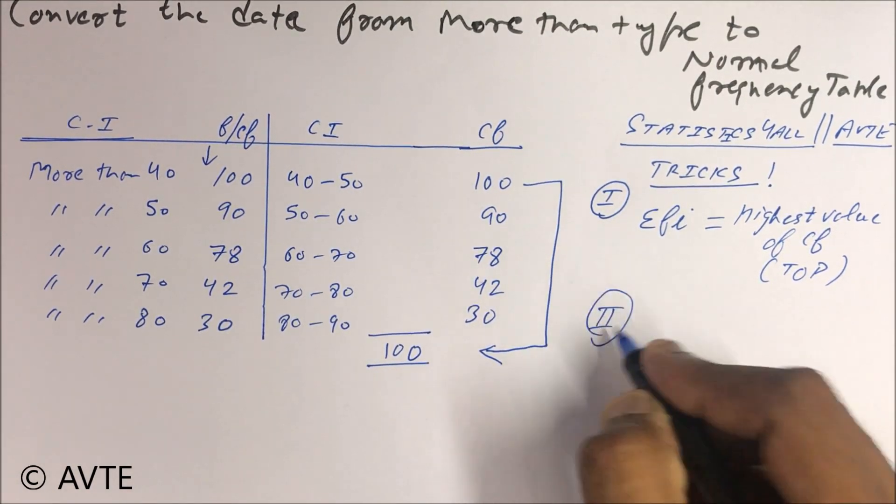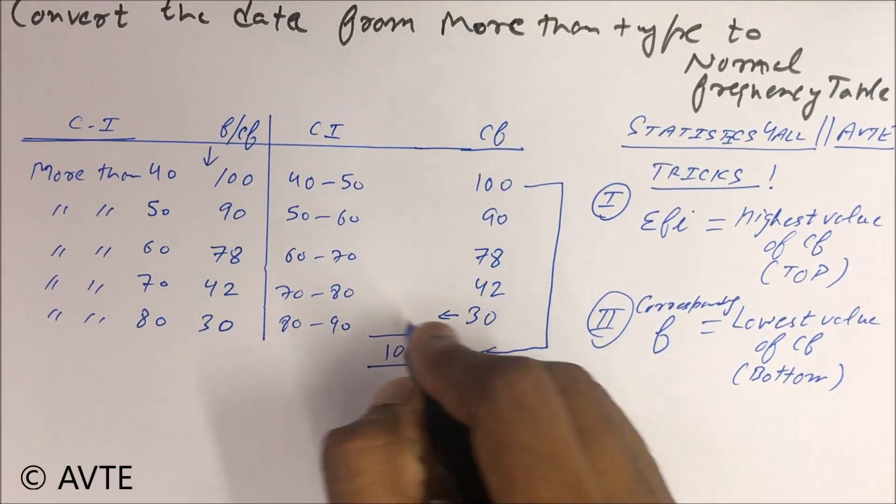And the second thing, remember, whatever is your lowest value of more than type CF, is always at the bottom, and which is equal to your corresponding frequency. So this is your 30, got it?